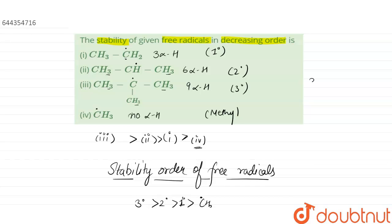So the order will remain the same. Three has the maximum stability, then two, then one, and then the fourth one, that is the methyl radical. So our answer is this.